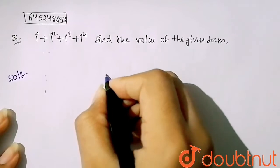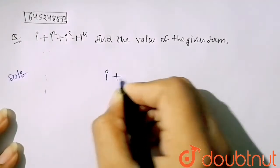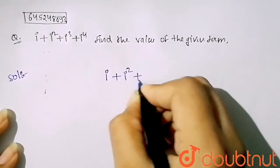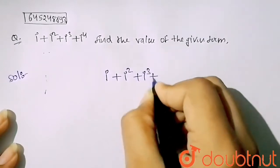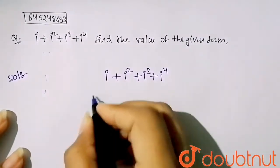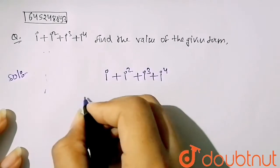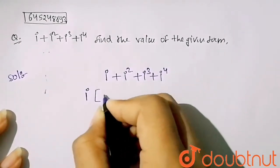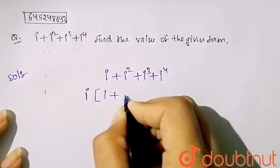Here first I will write my given term which is iota plus iota square plus iota cube plus iota to the power 4. So if I take iota common, here what I will get: 1 plus iota plus iota square plus iota cube.